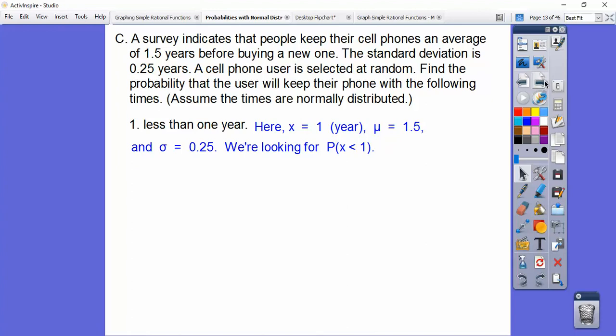So let me just scroll it up to get some room. So that's our X. So X equals one year, and our mu is, it says on average right here. So there's our mu, 1.5 years, and there's our standard deviation right there. And we're looking for the probability that that person is going to keep their phone for less than a year right there.